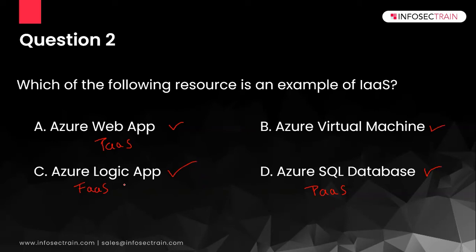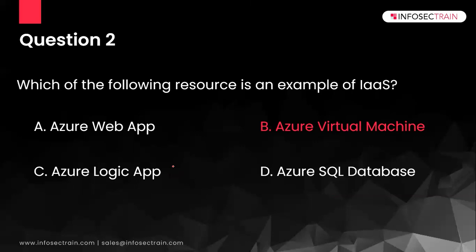That leaves us with option B, which is the correct answer. Azure Virtual Machine is the right answer because with a VM you specify how much RAM you want, configure the network interface card, set network security group rules, and choose the operating system. This is the closest thing to a physical on-premise data center that you'll find in cloud services, making it a classic example of Infrastructure as a Service.